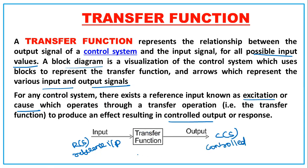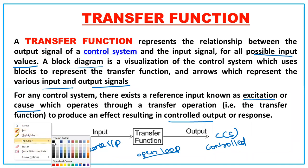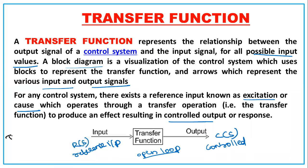For an open loop control system, there will be a reference input, a corresponding controlled output, and a transfer function in between. The transfer function T(s) = C(s)/R(s), and this is defined assuming zero initial conditions.